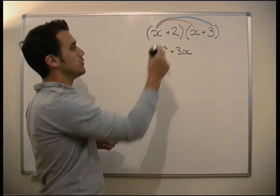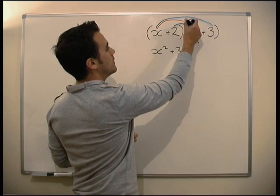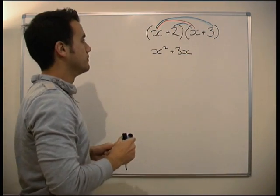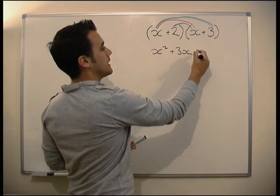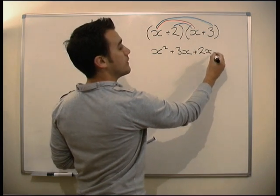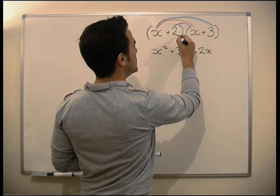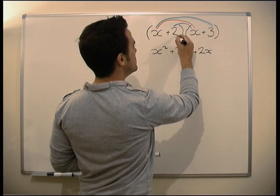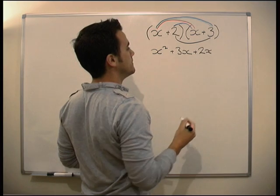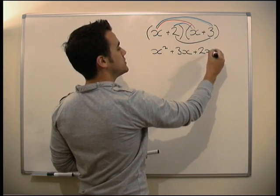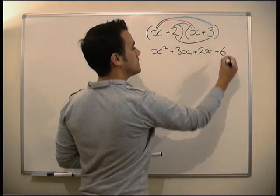The next thing we do, we move on to the 2, and we times the 2 by the x, so we add 2x. And last but not least, we times the 2 by the 3, so we get plus 6.